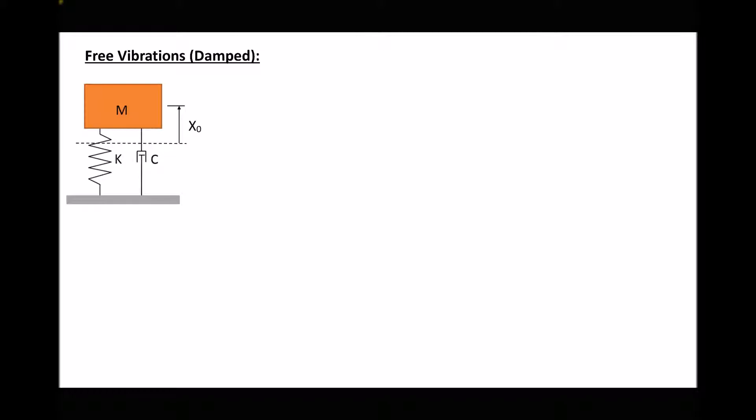Now we've already looked at what would occur in a mass spring system if there was no damping involved. What we said was, providing all of the energy was conserved within the system, the mass would continue to oscillate up and down indefinitely or until it was disturbed. But by introducing this new component, the damper or the dashpot, it actually changes the nature of those vibrations.